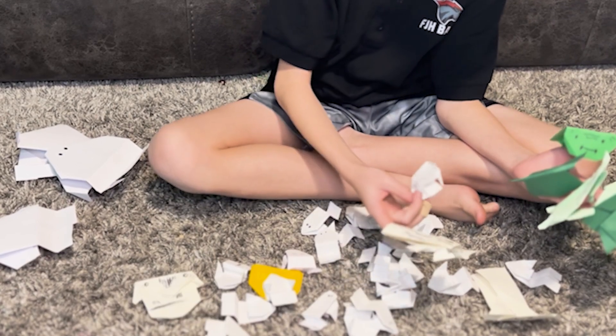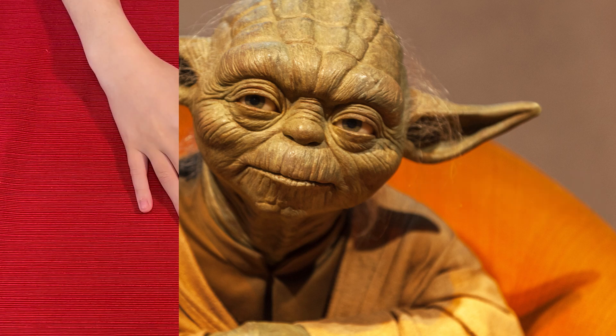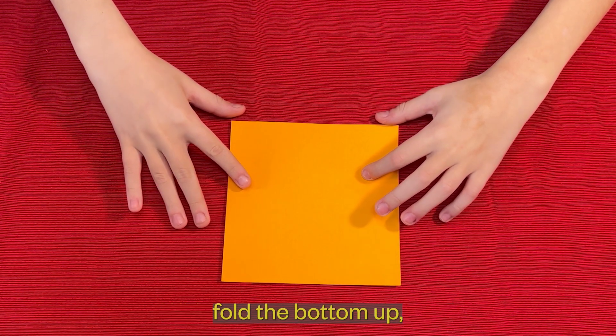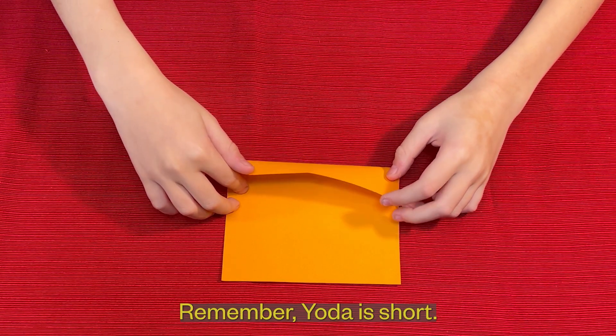Let's start with the folded Yoda first. With a square piece of paper, fold the bottom up just less than a third. Remember, Yoda is short.